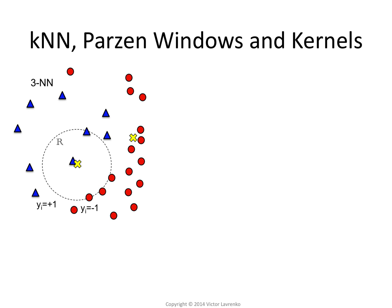For a different testing point, it's also three nearest neighbors — three red points. But now the three nearest neighbors span a much narrower, smaller region in space. For the first instance, I had to look pretty far to get three nearest neighbors; here, they're all nearby.